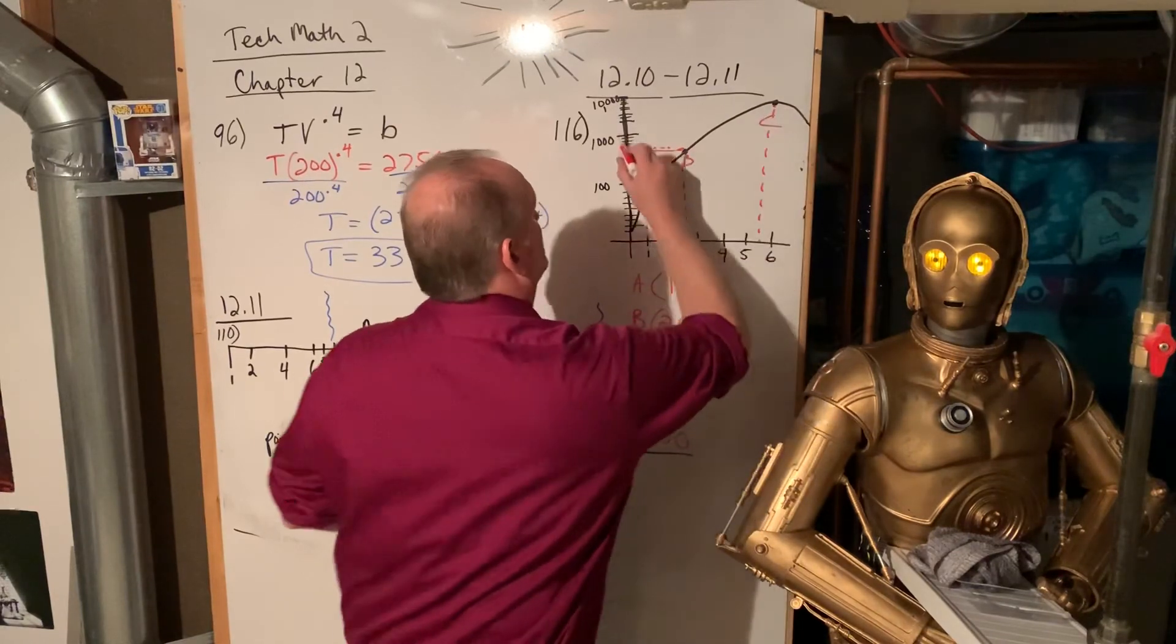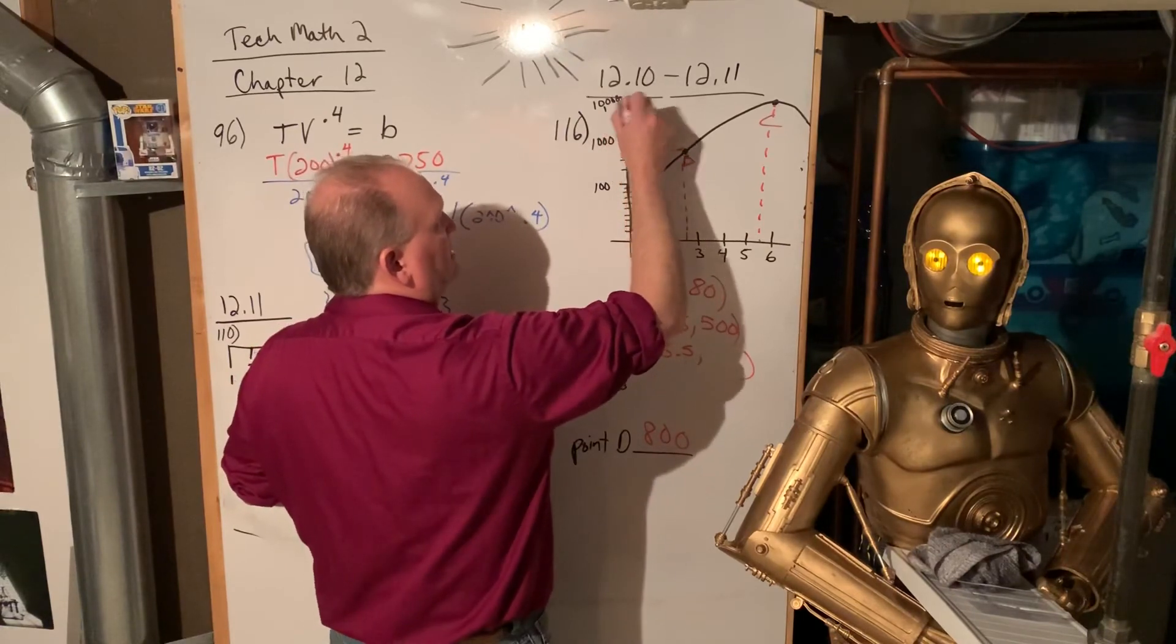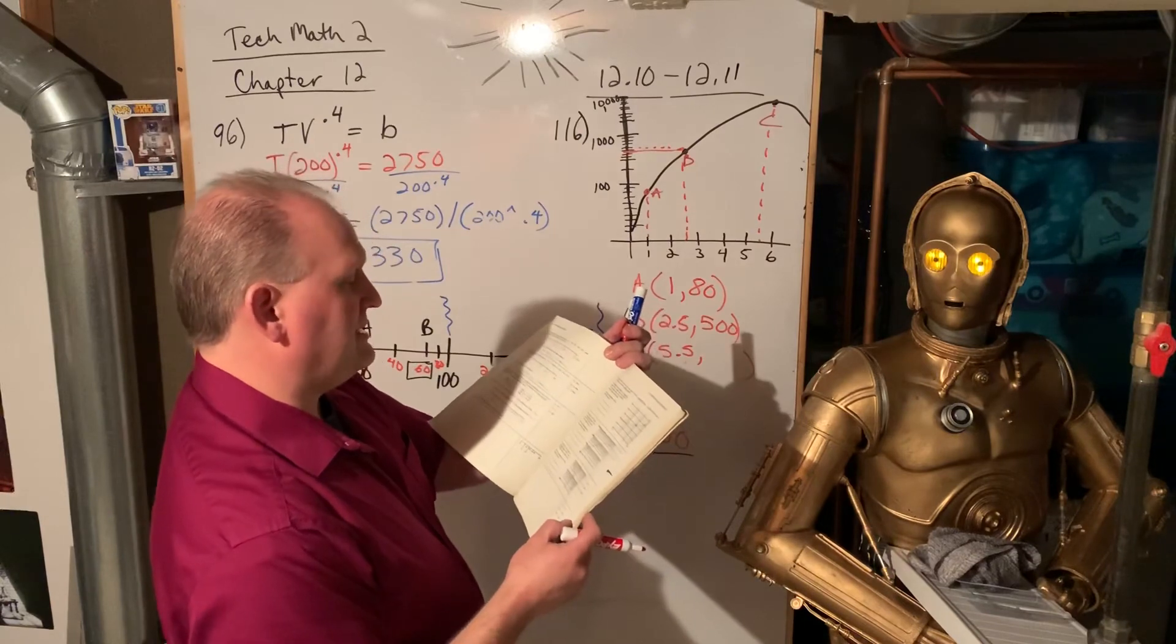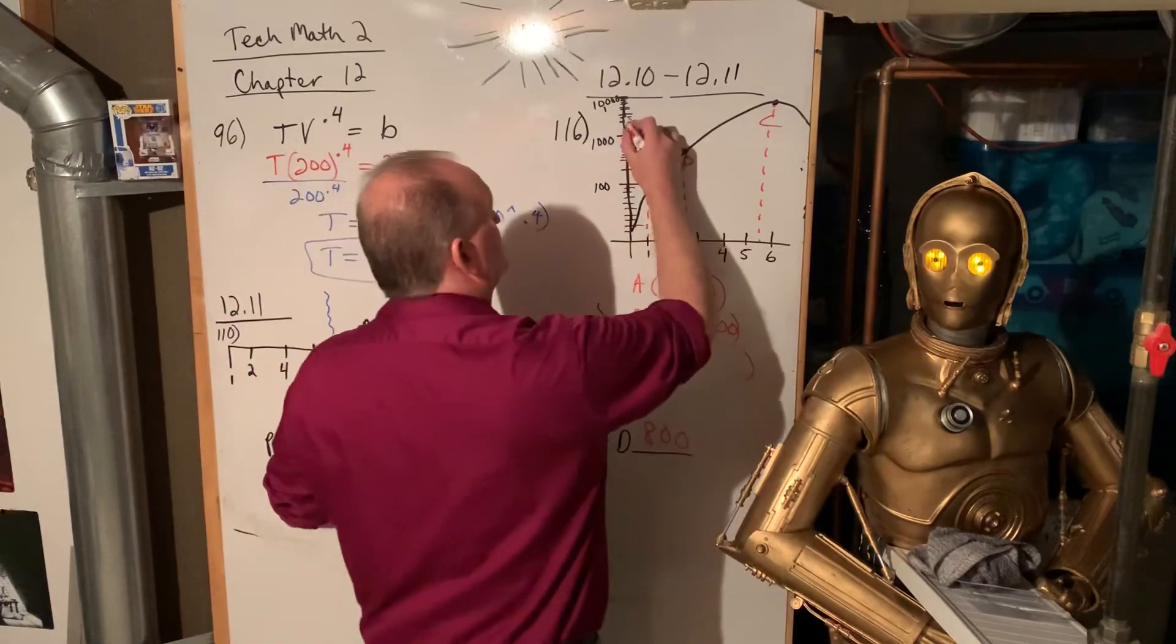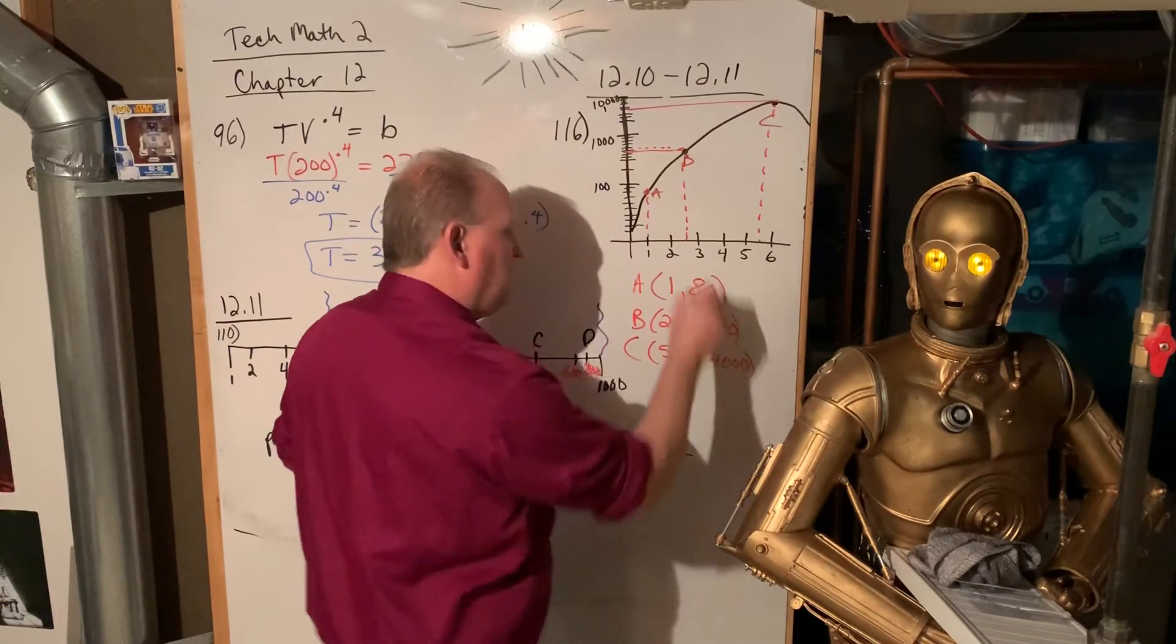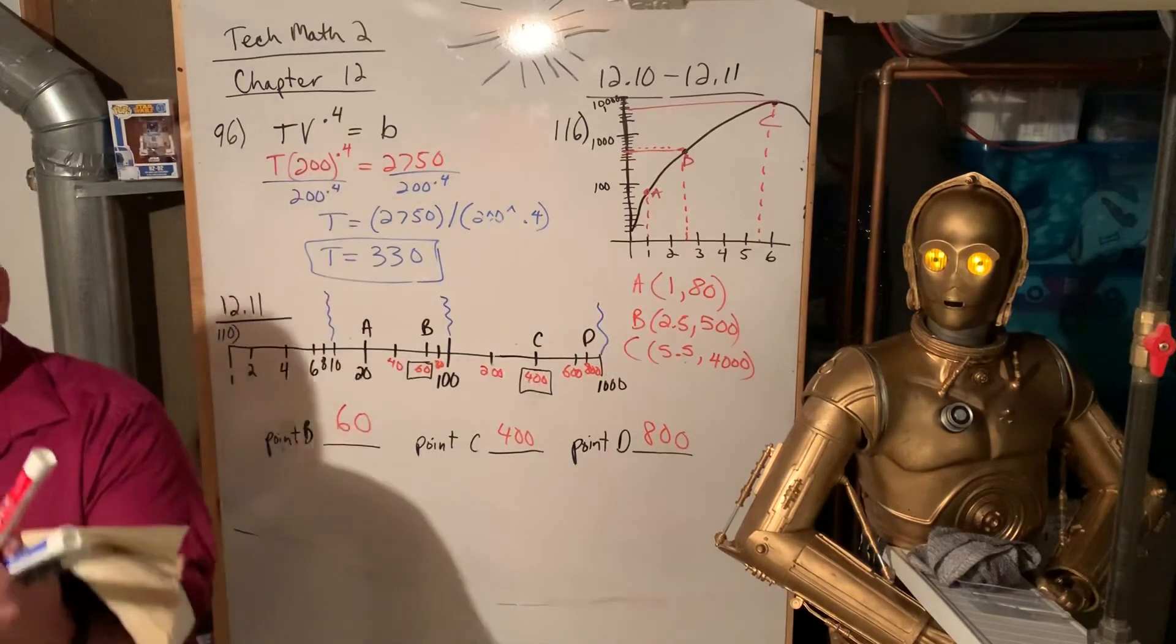And then what's the other one? So five and a half. And then now we're in the thousands. So if that's a thousand, that's two thousand, three thousand, four thousand, five thousand, six thousand all the way up. And it looks like it's on the fourth line: one, two, three, fourth line. And so that's four thousand.